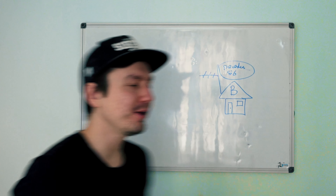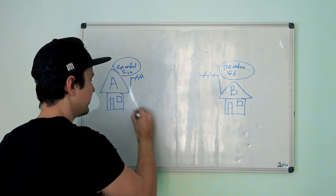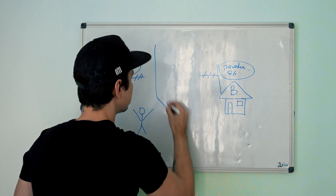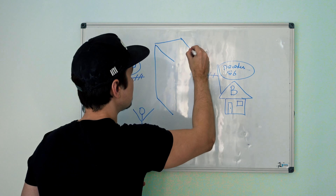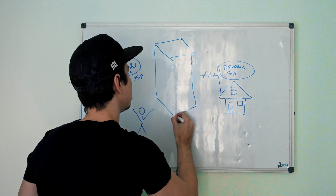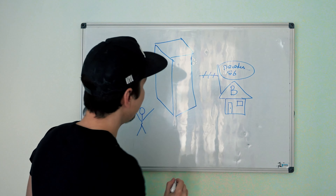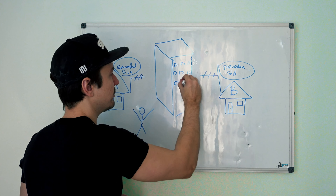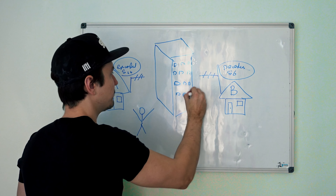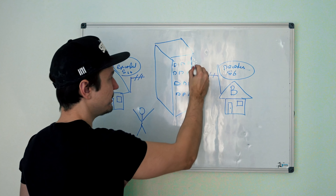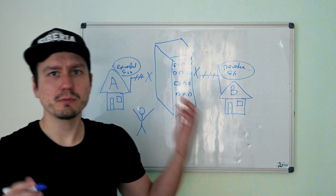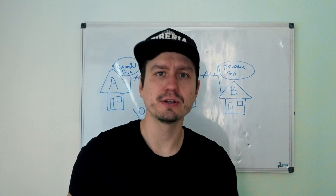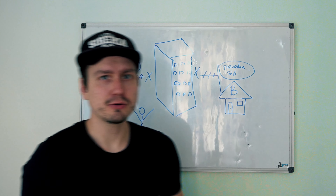Everything's great so far, but suddenly Bob the builder comes along and erects a very tall building right in between our buildings — like that. This is a residential building and there are a lot of people living in it, but the problem is that now we don't have a line of sight anymore. We can't communicate because electromagnetic waves do not propagate very well through concrete, so we are blocked and can't talk to each other anymore.